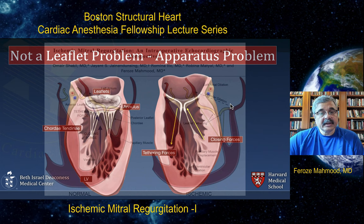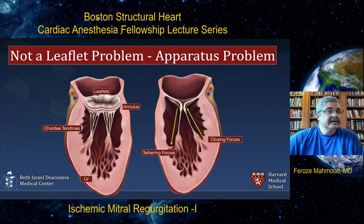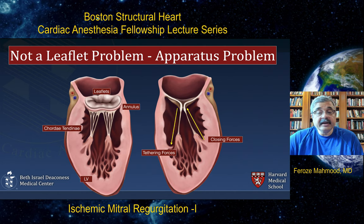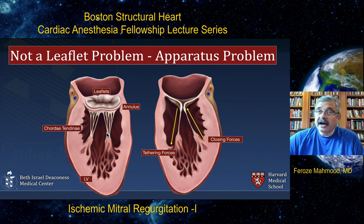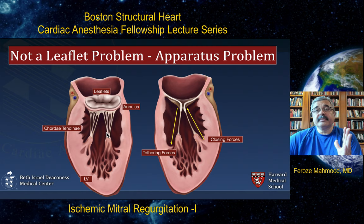As I said, the leaflets and chordae tendineae are innocent bystanders. Ischemic mitral regurgitation is not a leaflet problem — it is an apparatus problem. The apparatus consists of the left atrium, the mitral annulus, the chordae tendineae, the leaflets, and the underlying myocardium. Therefore, this entire problem is with the entire mitral valve apparatus, not just the leaflets.